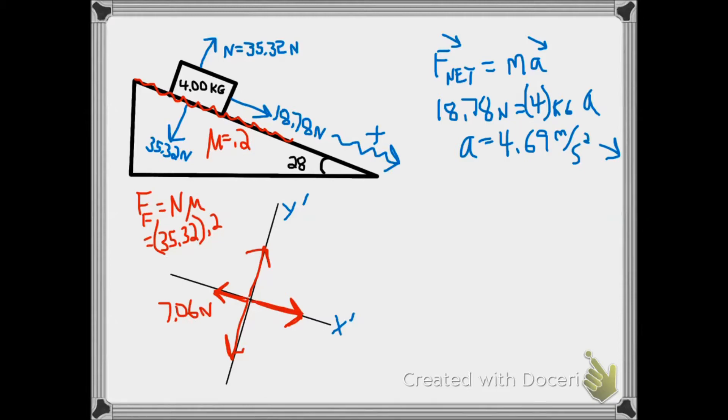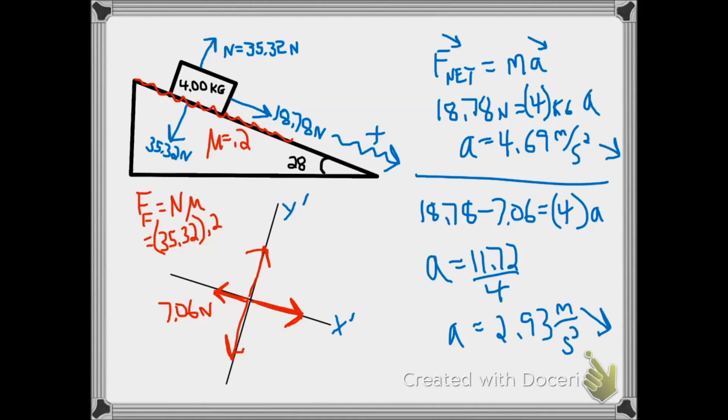Summing our forces in the direction of motion, now we're going to have the 18.78 component going down the plane minus the friction force. We set that equal to the mass 4 times the new acceleration and we find our new acceleration is just going to be 11.72 newtons divided by 4 kilograms or a new acceleration of 2.93 meters per second squared down the plane, slightly less than the original one when we didn't have friction.